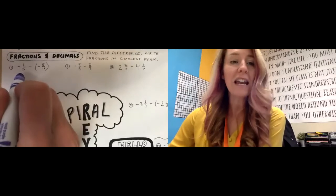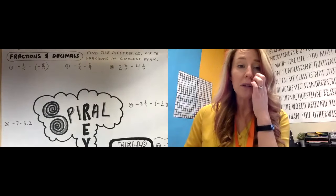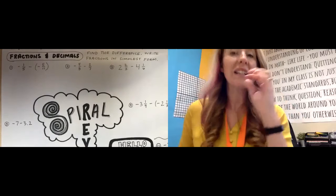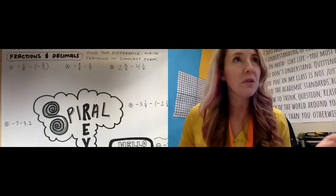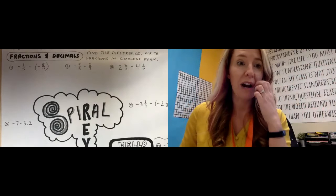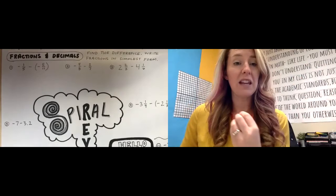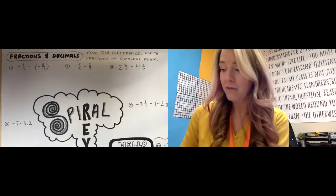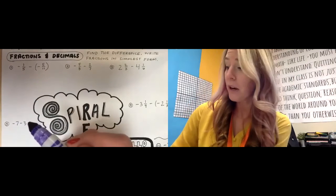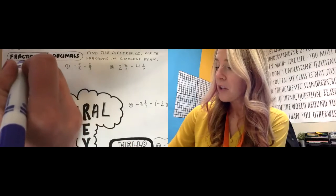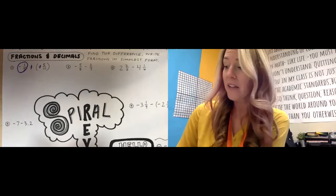So this first one is negative one fifth minus negative five elevenths. Now, if you're ever confused about what to do, think about taking a simple version of that problem and writing it out. That will help you remember what to do with the fractions, because I think a lot of us freeze up when we have fractions. So if I have negative one fifth and I'm subtracting a negative, I can do keep, change, change. Remember I've told you always make it an addition problem. Keep, change, change. So now it's negative one fifth plus a positive five elevenths.